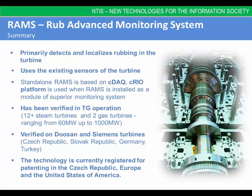In brief summary as a presentation conclusion: the RAMS, RAP Advanced Monitoring System, primarily detects and localizes rotor-stator contact in turbines. The R&D team of the Diagon Laboratory has successfully implemented the system on 12 steam turbines and 2 gas turbines in Czech Republic, Slovakia, Germany, and Turkey. The technology is currently registered for patenting in the Czech Republic, Europe, and the United States of America.